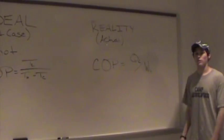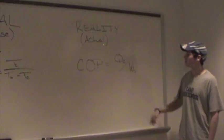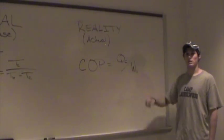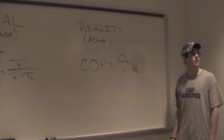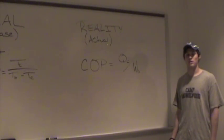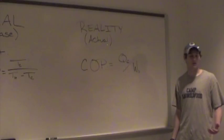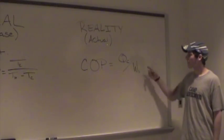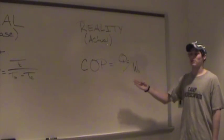Contrast that with the real scenario, where you divide your QC, which is the heat leaving the fridge through the boiler, and your shaft work, which is the work that you put into the compressor in order to compress the gas before the condenser. This value will always be less than your ideal case.